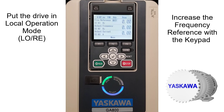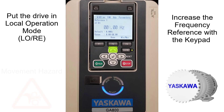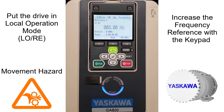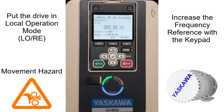Set the keypad as the frequency reference and run source by pressing the LORE key. The frequency reference source will change at the top of the keypad and the LORE key light will illuminate. From the home screen, press enter — this takes you to the reference 1 screen. Use the arrow keys to enter a frequency of 6 Hz, press enter, then press run. The drive run light should go solid and the motor will spin.